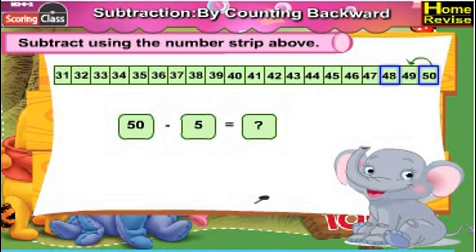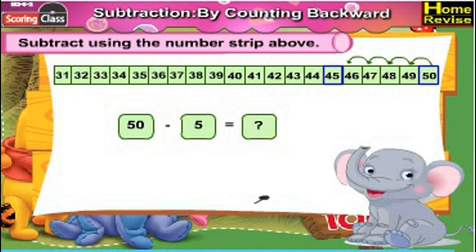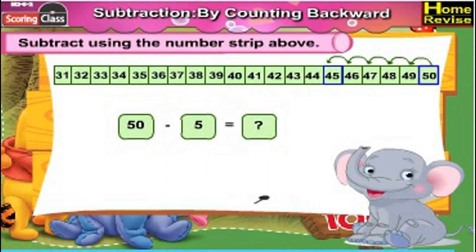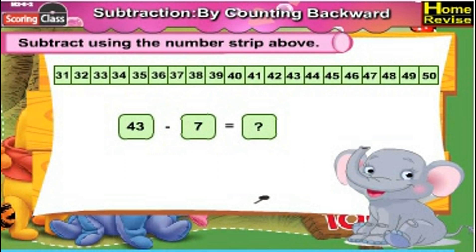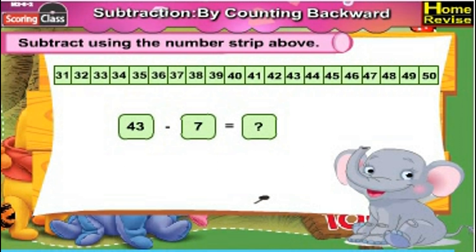50 minus 5: we have to subtract 5 from 50. Subtracting 5 means going five places back from 50, so that would be 45. Which means 50 minus 5 is 45.